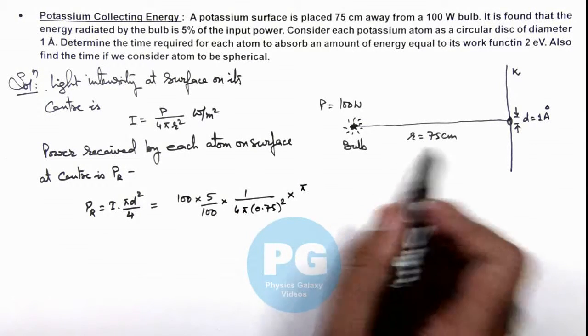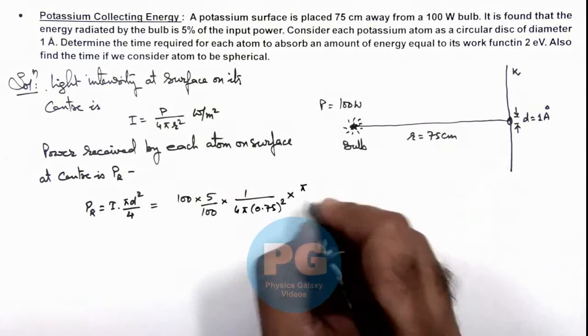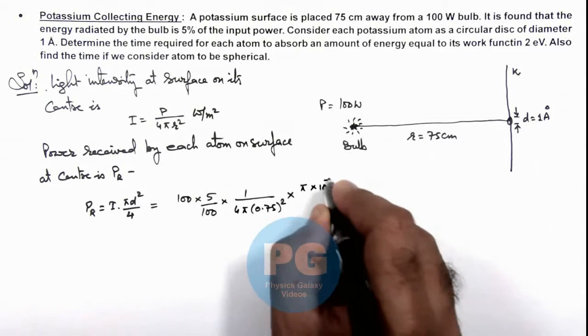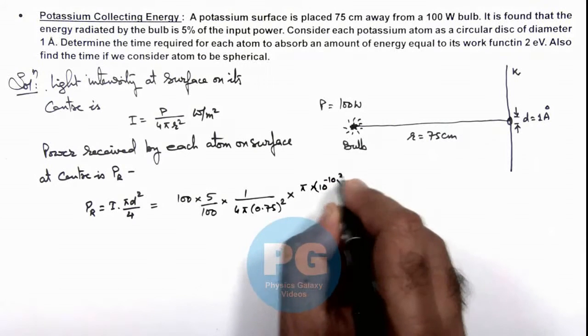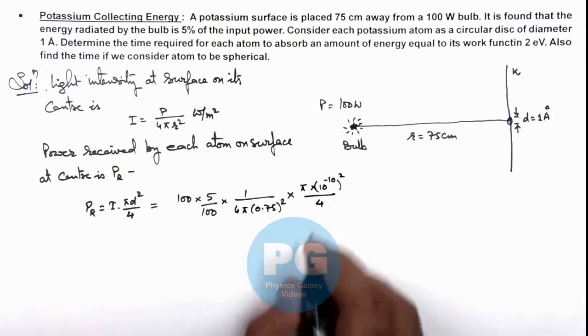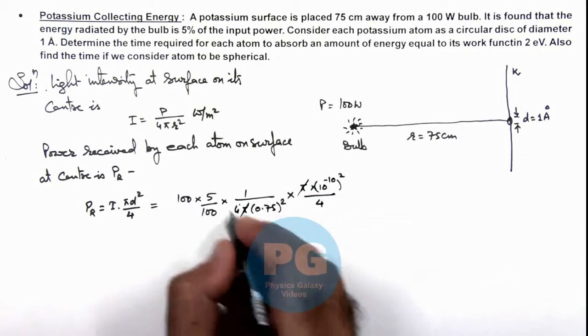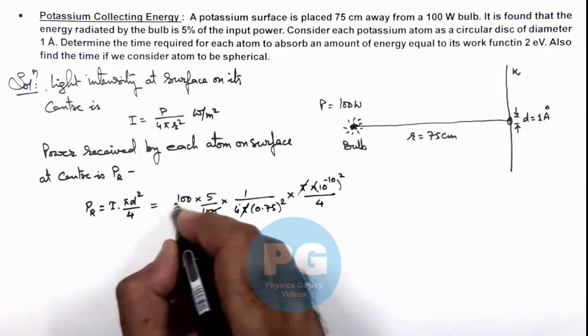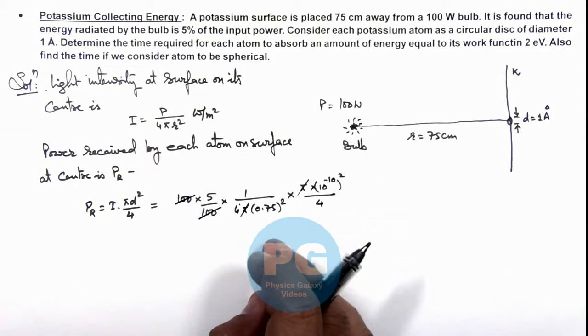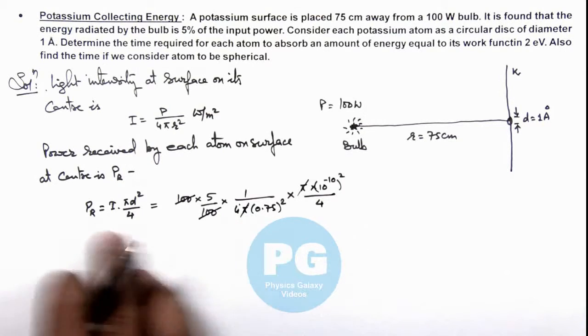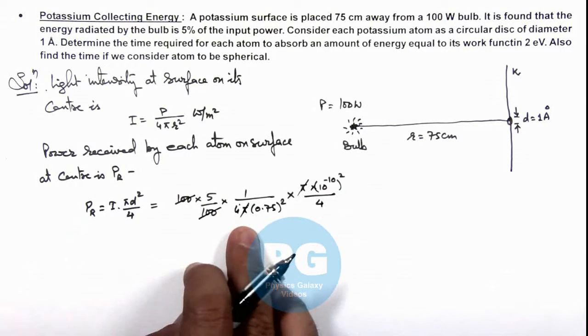Since d is 1 Angstrom, this is (10⁻¹⁰)² divided by 4. Here π cancels out and 100 also cancels out. On simplifying, if this is the power received, we can directly write...